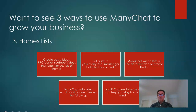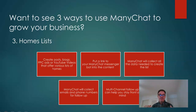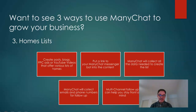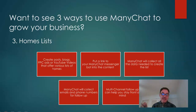The third way to generate more business is with homes lists. As a standalone strategy, you can create posts, blogs, pay-per-click ads, or YouTube videos offering various lists of homes — like a list of homes under half a million in a specific neighborhood, or homes listed within the past week. You get people to click into Messenger, collect the data about bedrooms, bathrooms, and neighborhood preferences. ManyChat will even collect emails and phone numbers so you can follow up, and you can use multi-channel follow-up to stay front of mind.